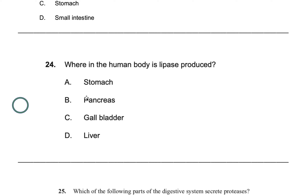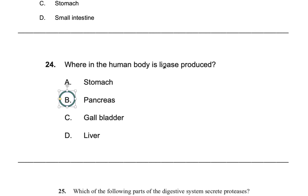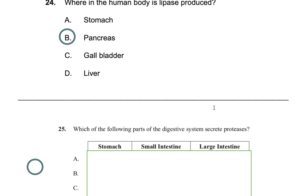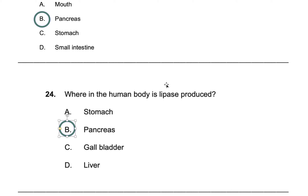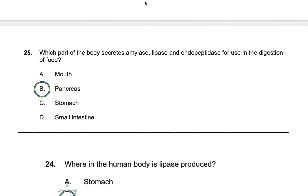Option A, the stomach, cannot be correct since it only makes pepsin, which breaks down proteins. Option B, the pancreas, does make lipase — so that's correct. Option C, the gallbladder, does not make lipase. The gallbladder stores what the liver produces — bile — and bile does break down fats but is not an enzyme. The liver makes bile, not lipase, so if the liver doesn't make lipase, the gallbladder won't have it either. The answer is B. I'll continue with more questions in part two — you'll likely see very similar multiple choice questions if you have a test on digestion.